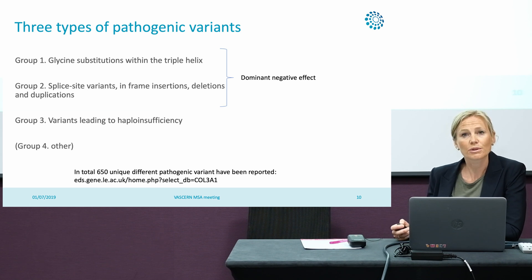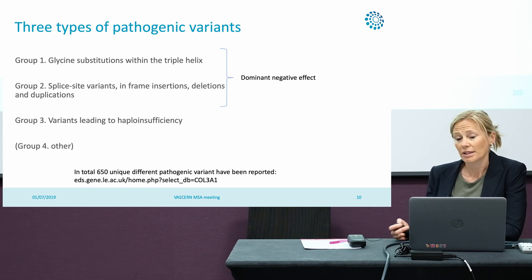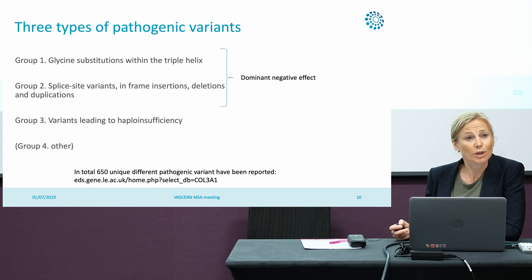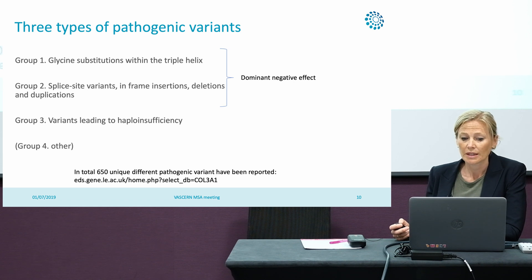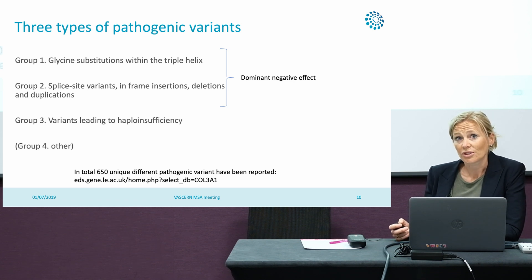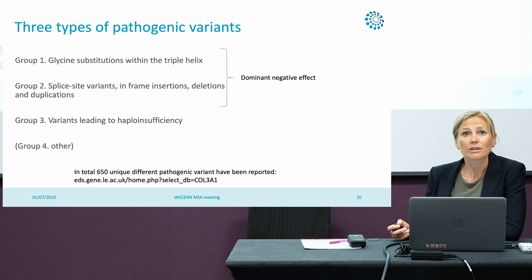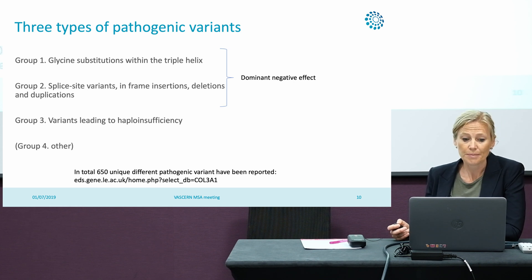In the last part of the talk I will discuss these variants. There are also variants that are not grouped in one of these three groups, but I won't go into detail with them. In total there are about 650 unique variants, and they can be found in a COL3A1-specific database or on ClinVar.